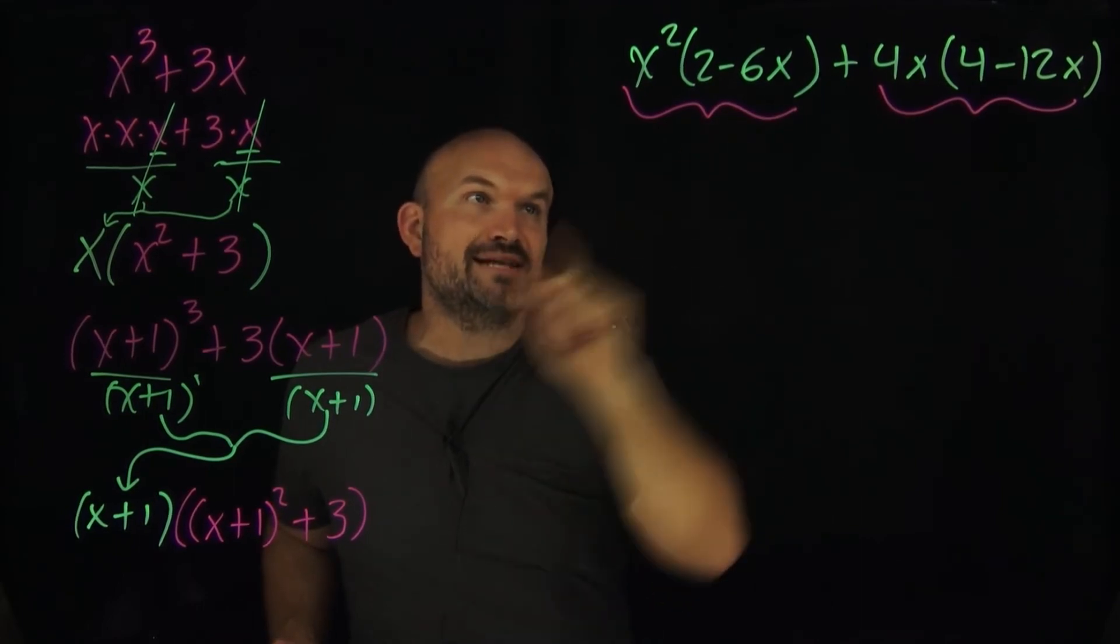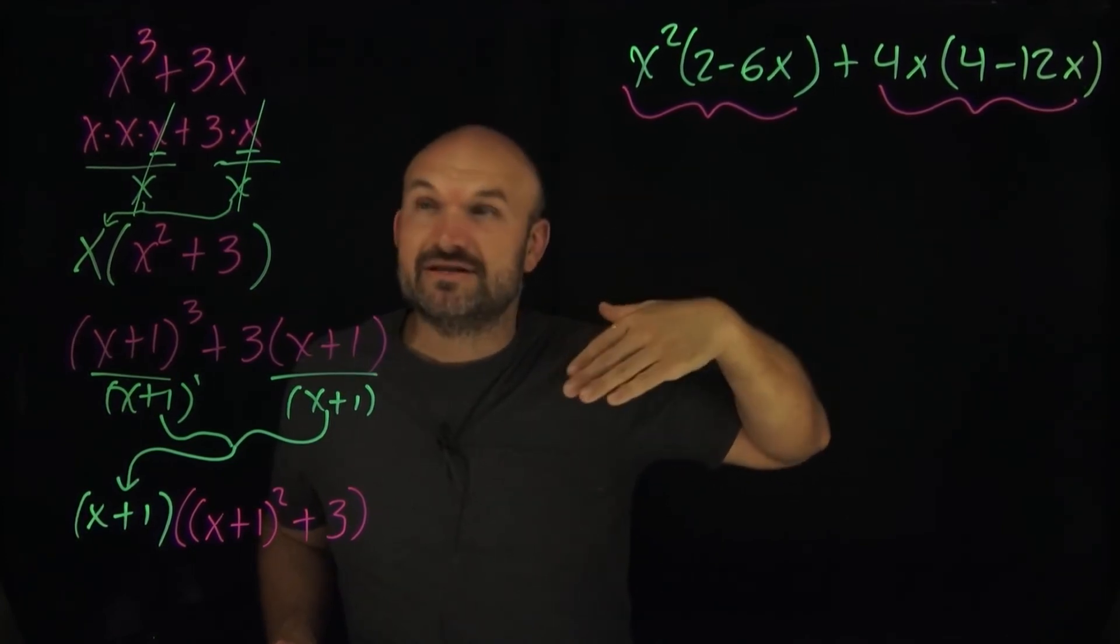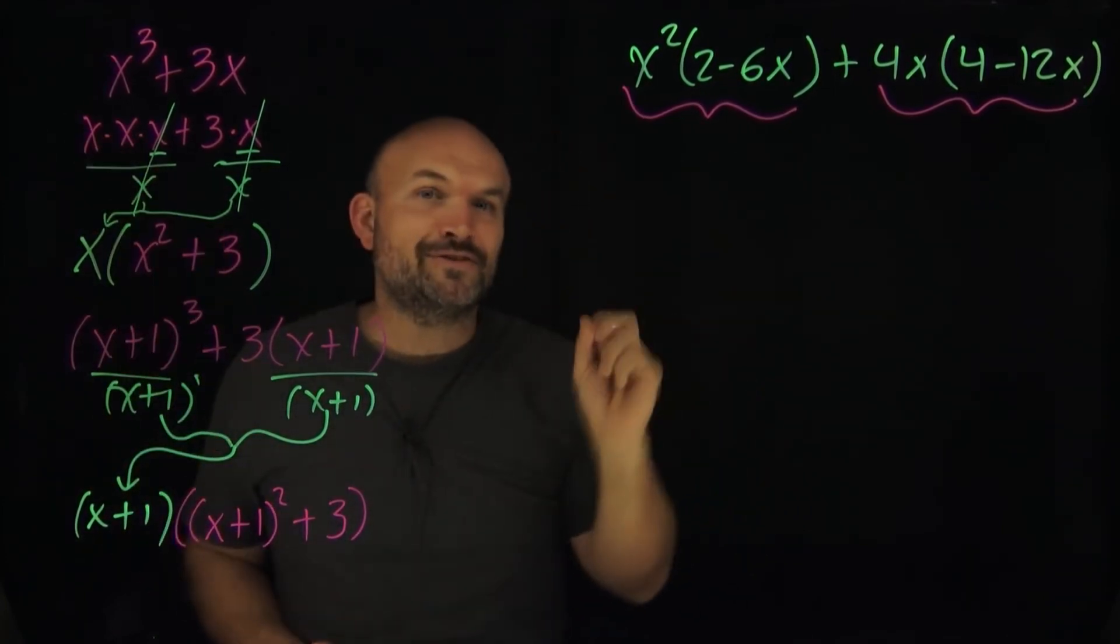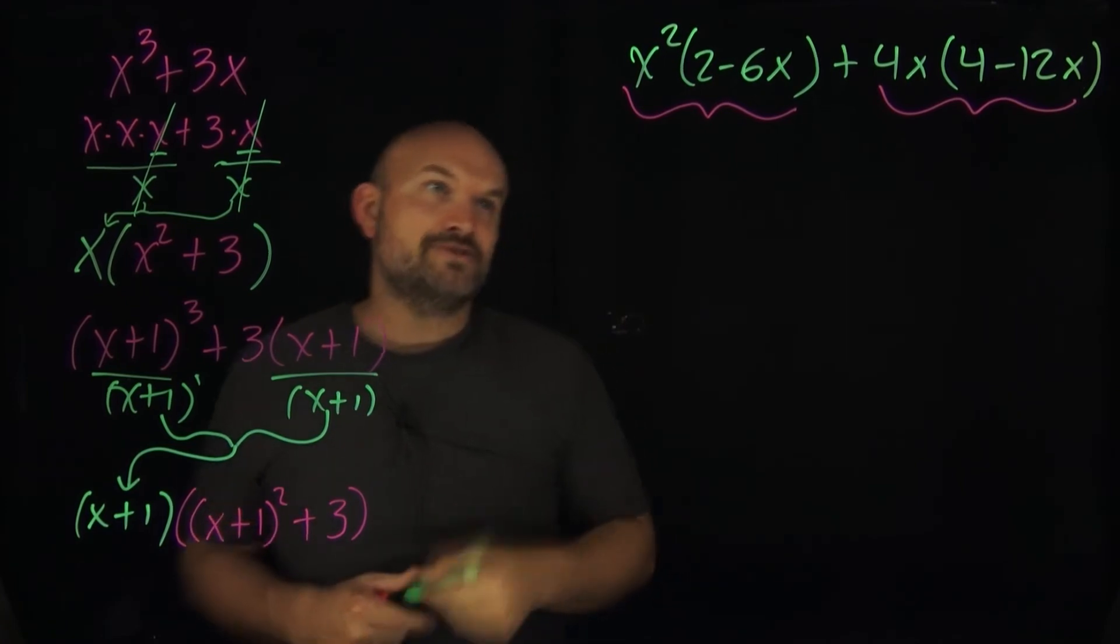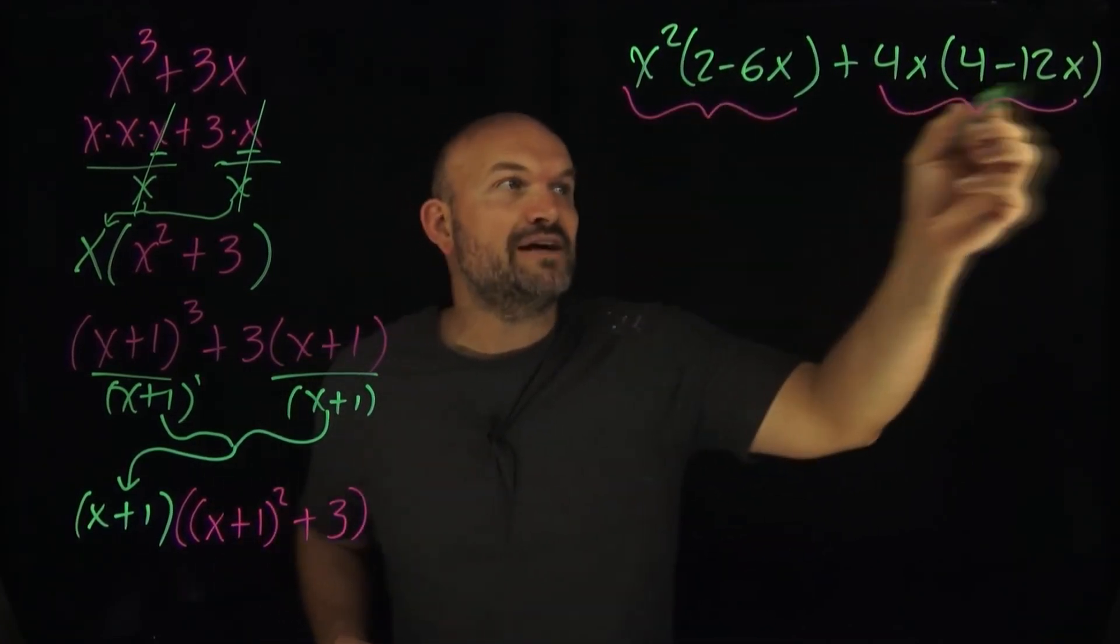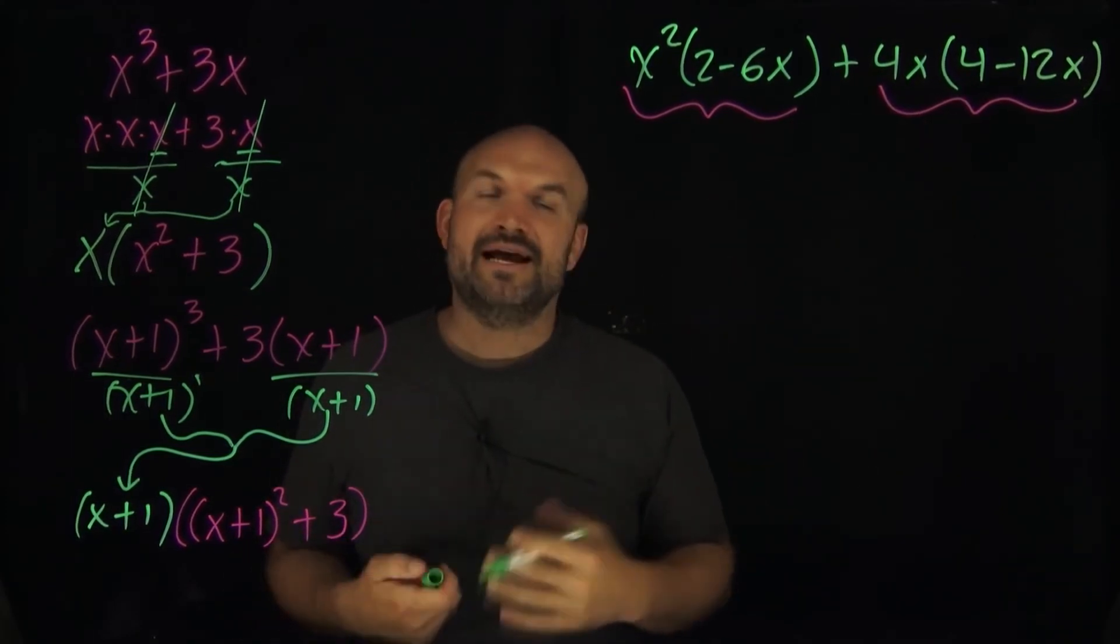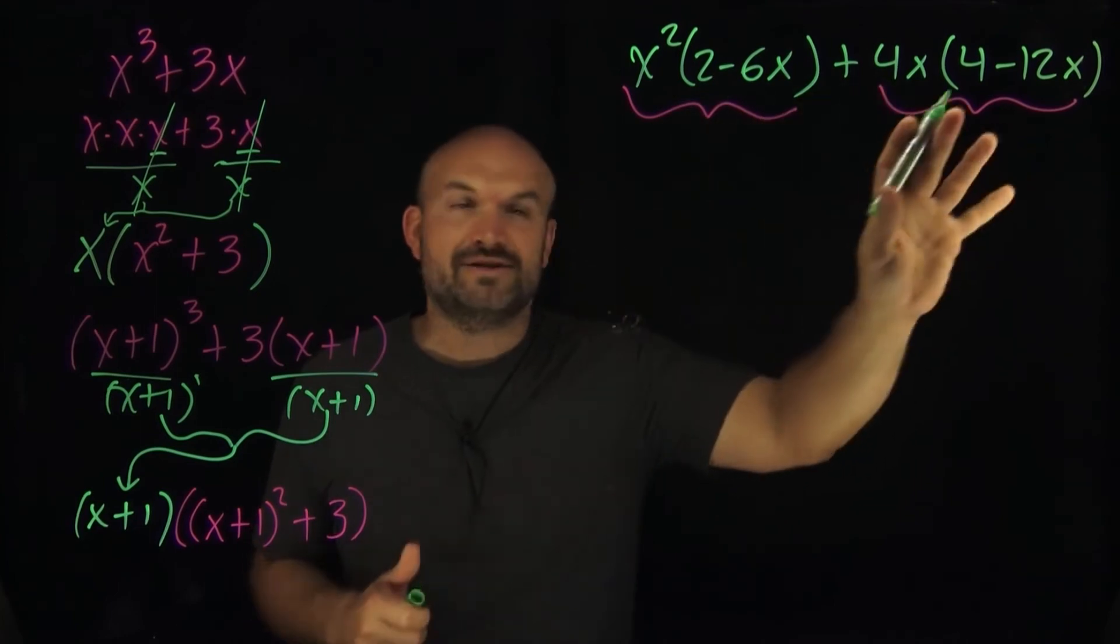You might have factored out the GCF or factored something out, but realize you didn't factor out the greatest common factor. So what I want you to recognize here is I can actually factor out a 2 in these two expressions and I can factor out a 4 in these two expressions. Hopefully that will now give me a simplified answer that I can further factor down. So let's go and see when I factor that out, see what I get.